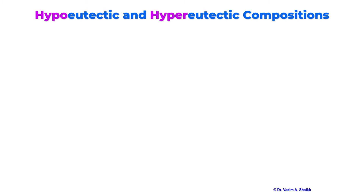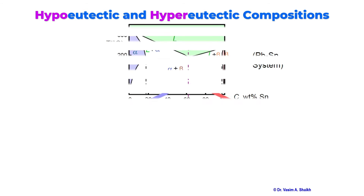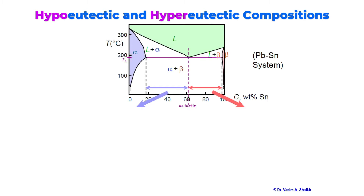One more very important point: in eutectic compositions, we have two types — hypo-eutectic and hyper-eutectic. Similarly, we can have hypo-eutectoid and hyper-eutectoid compositions. Looking at the lead-tin phase diagram, the eutectic composition is the invariant point where liquid transforms into two solid phases at a fixed temperature and composition — this will not change in the phase diagram.